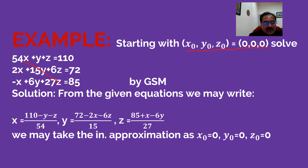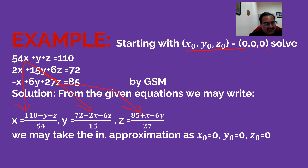For the solution, from the given equations we may write: x = (110 − y − z) / 54, y = (72 − 2x − 6z) / 15, and z = (85 + x − 6y) / 27.